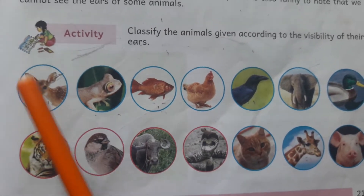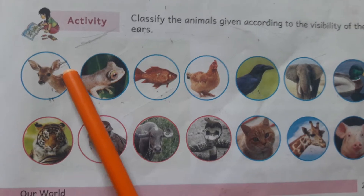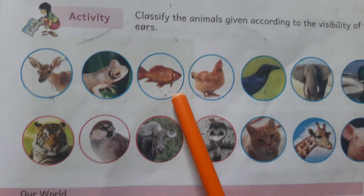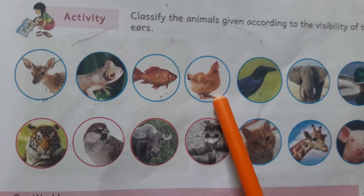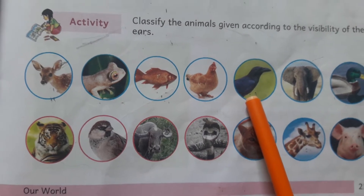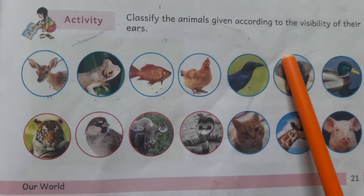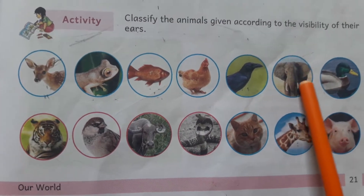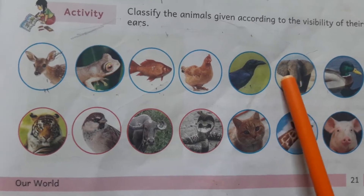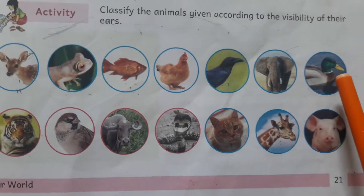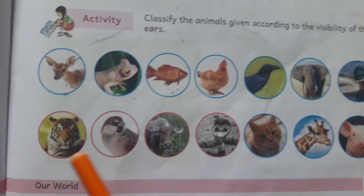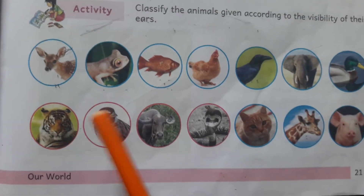Deer — deer ears are visible. Frog? No. Fish? No. Hen? Not visible. Crow? No. Elephant? Oh, elephant has big ears — visible. Duck? Not visible. Tiger? Visible.